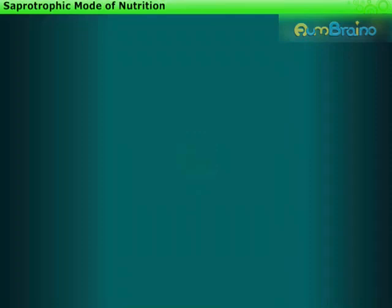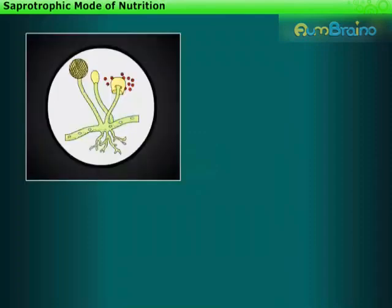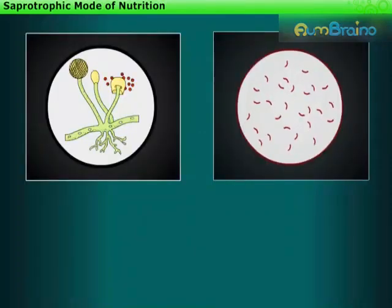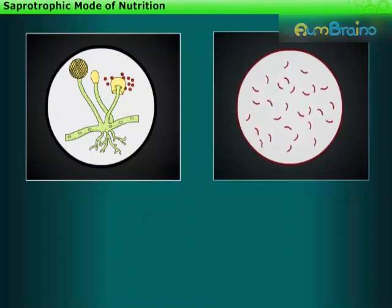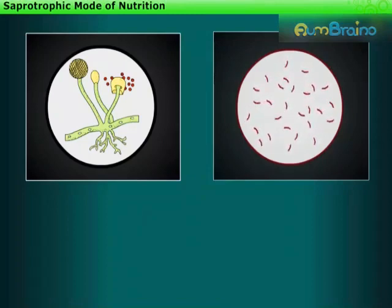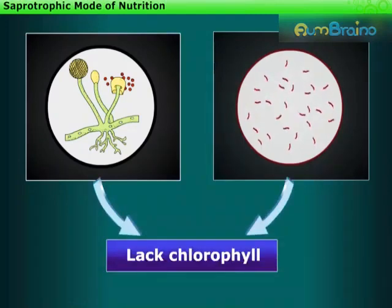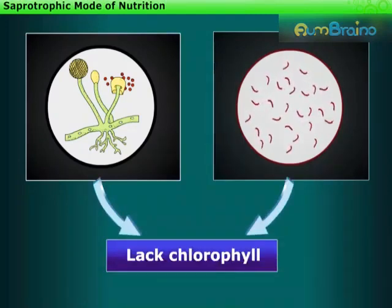Saprotrophic Mode of Nutrition. Some organisms, such as fungi and bacteria, obtain their nutrition from decaying organic matter. They are non-green plants which lack chlorophyll, and hence cannot make their food by photosynthesis.